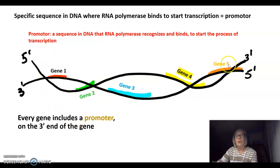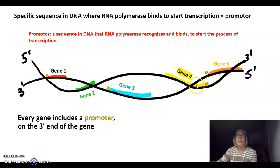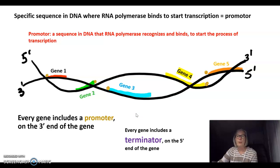If we look at our double-stranded molecule of DNA, there would be a promoter on the three prime end of each gene on one strand. And looking at the other strand, which goes from three prime to five prime, there would again be a promoter on the three prime end of each gene. RNA polymerase also has to know when to stop, so there's something called a terminator sequence on the five prime end of each gene.